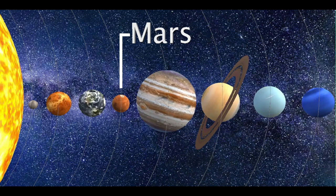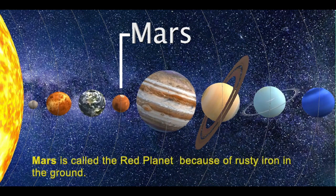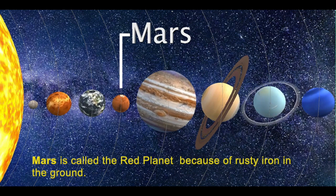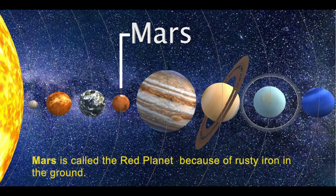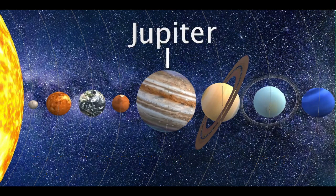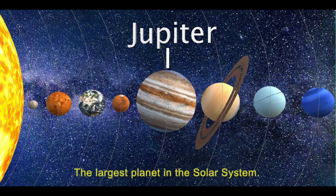Fourth is Mars. Mars is called the red planet because of rusty iron in the ground. Fifth is Jupiter.